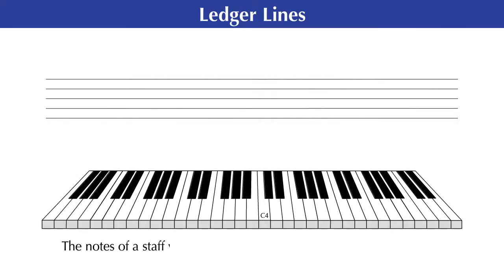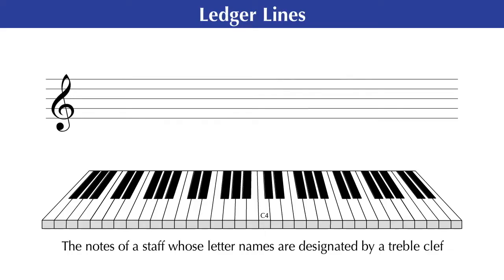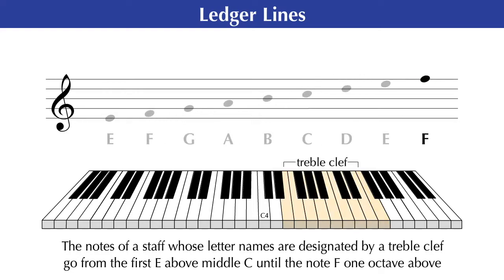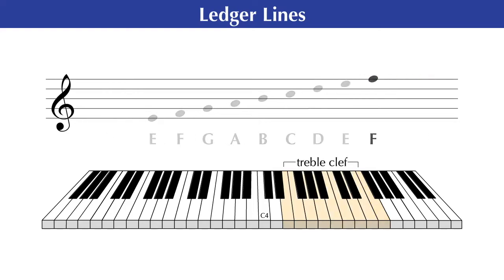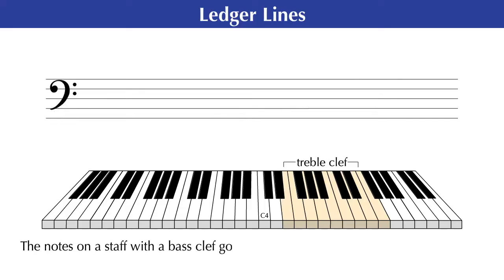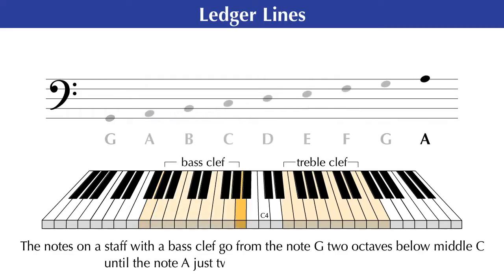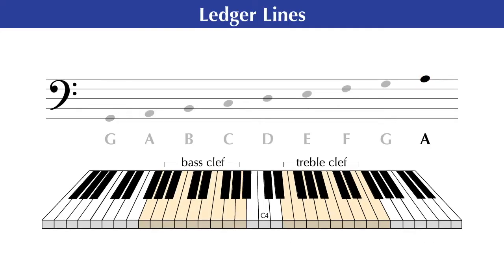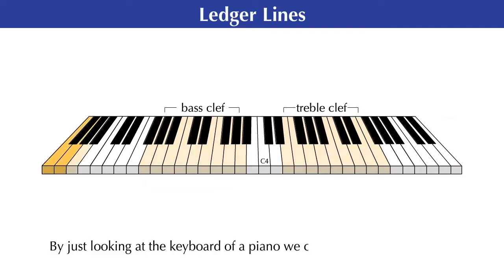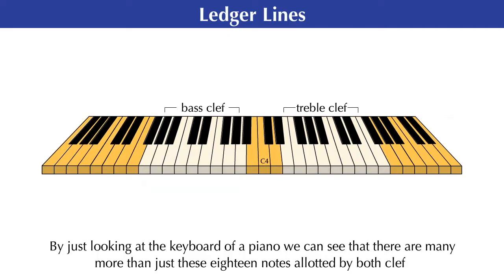The notes of a staff whose letter names are designated by a treble clef go from the first E above middle C until the note F one octave above. Likewise, the notes on a staff with a bass clef go from the note G two octaves below middle C until the note A just two letter names below middle C. However, by just looking at the keyboard of a piano, we can see that there are many more than just these eighteen notes allotted by both clefs.